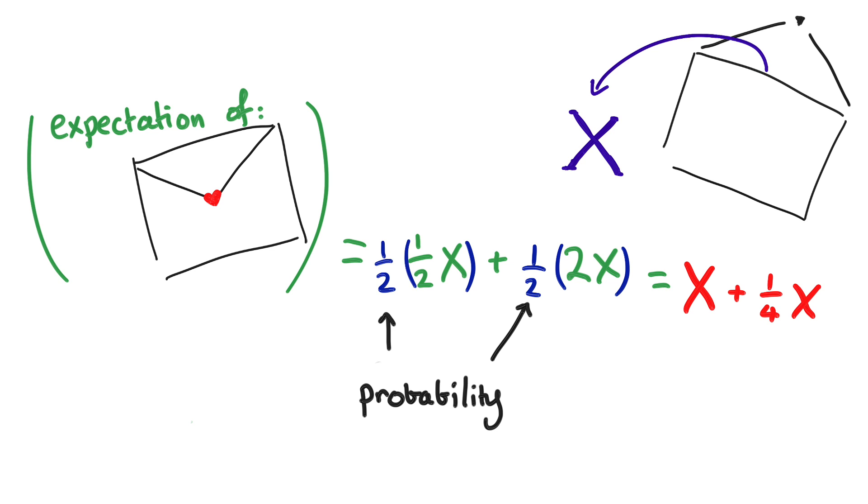But that's bigger than x. As in, in expectation, the other envelope has more money than the one you currently have, and so you should switch.